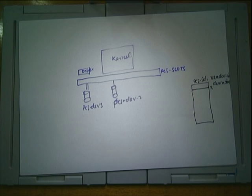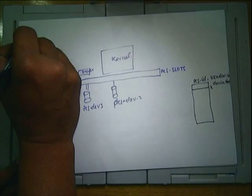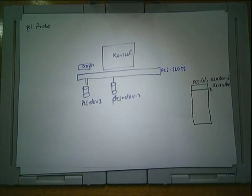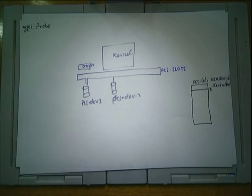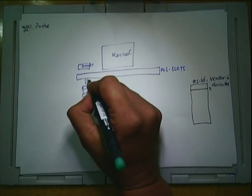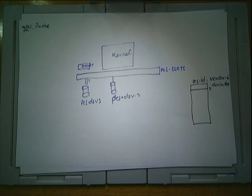This is called a PCI probe. When you register your driver, you provide interfaces to the kernel: if you find a new device, call my probe function — say, my_pci_probe. When the kernel detects a PCI device on slot 1, it sends the probe request to all drivers registered as PCI drivers.